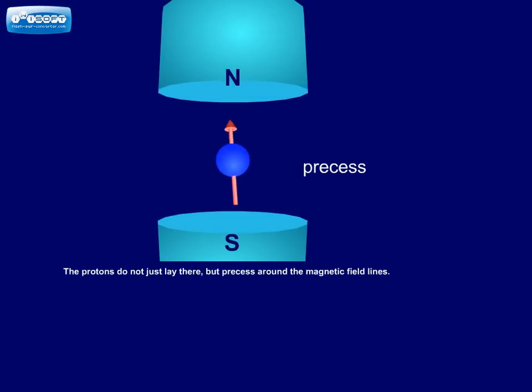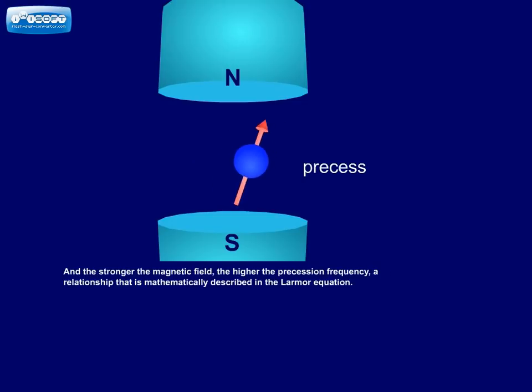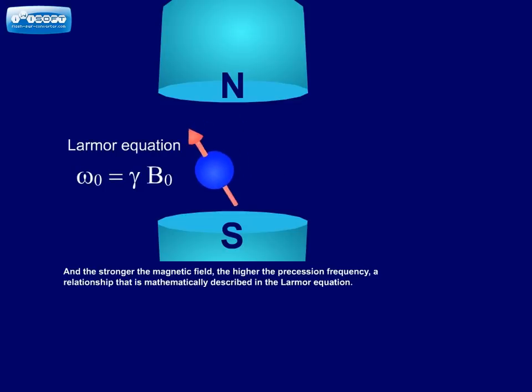The protons do not just lie there, but precess around the magnetic field lines. And the stronger the magnetic field, the higher the precession frequency, a relationship that is mathematically described in the Larmor equation.